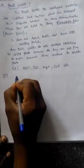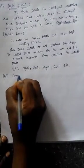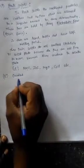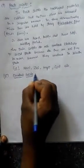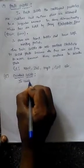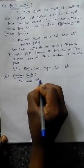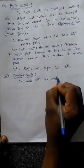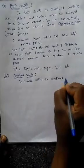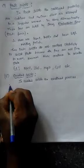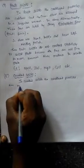The second type of crystalline solids is covalent solids. In covalent solids, the constituent particles are non-metallic atoms.